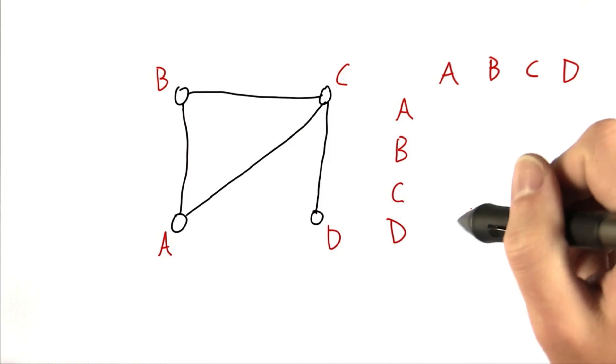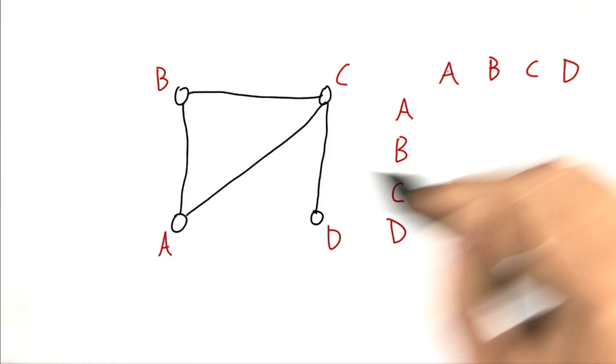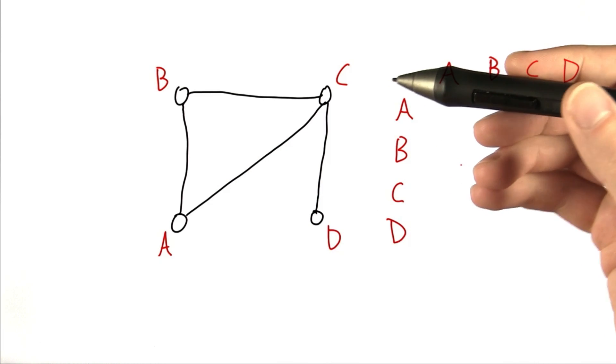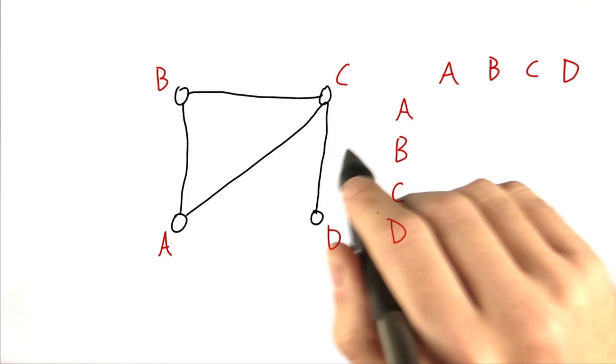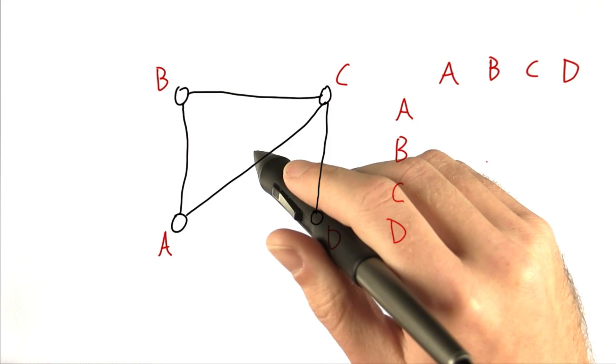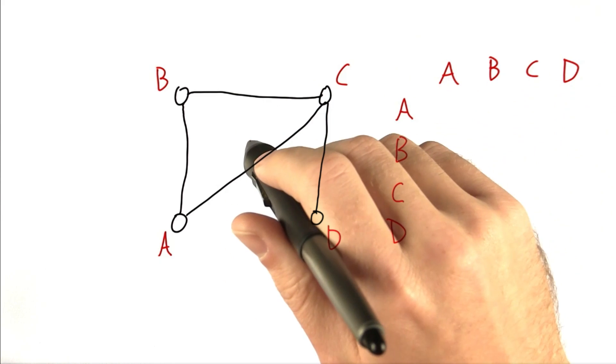An adjacency matrix specifies which vertices are connected to which other vertices. So let's go ahead and explain by building this adjacency matrix for this graph.